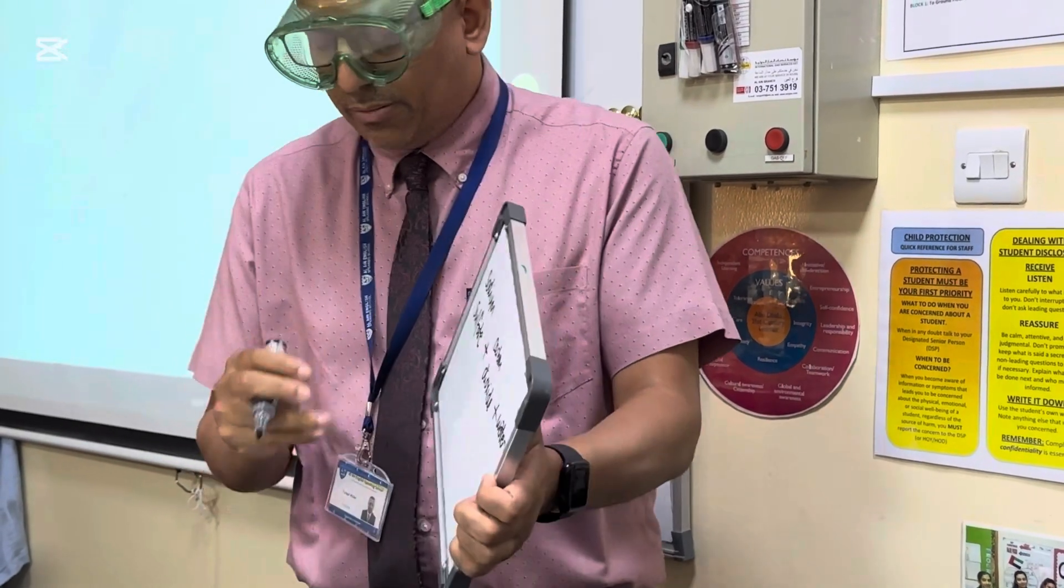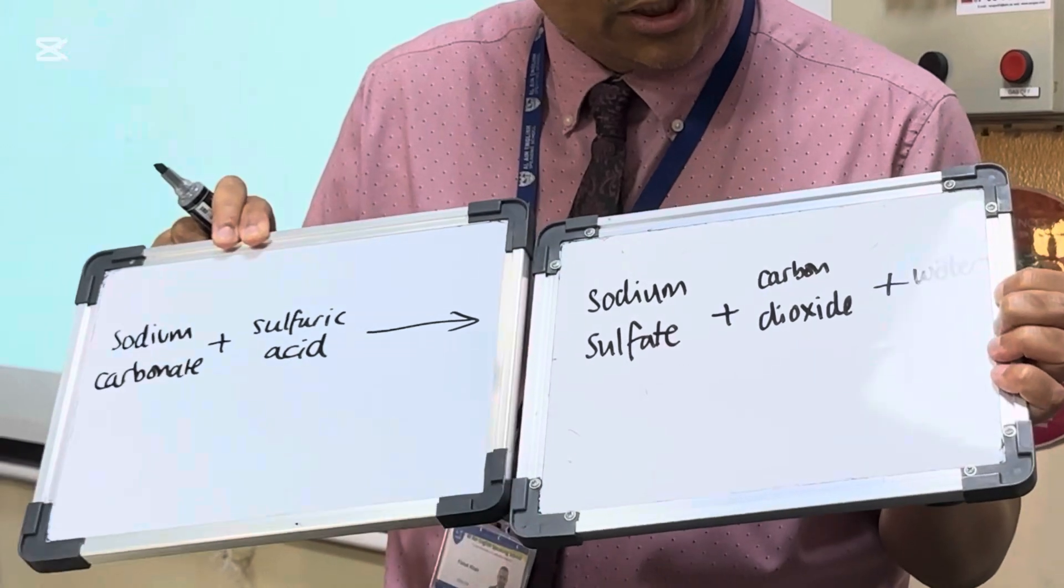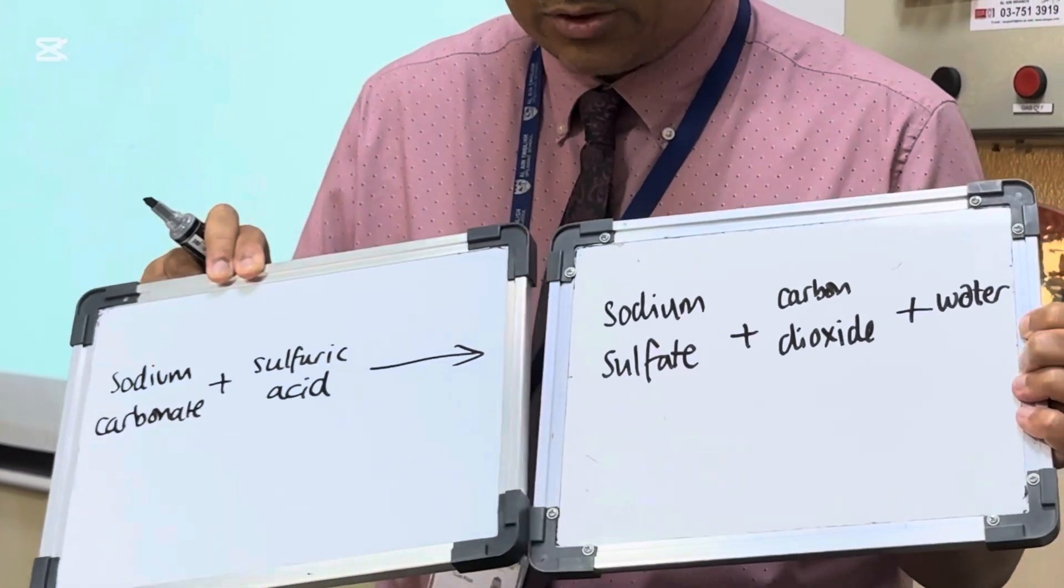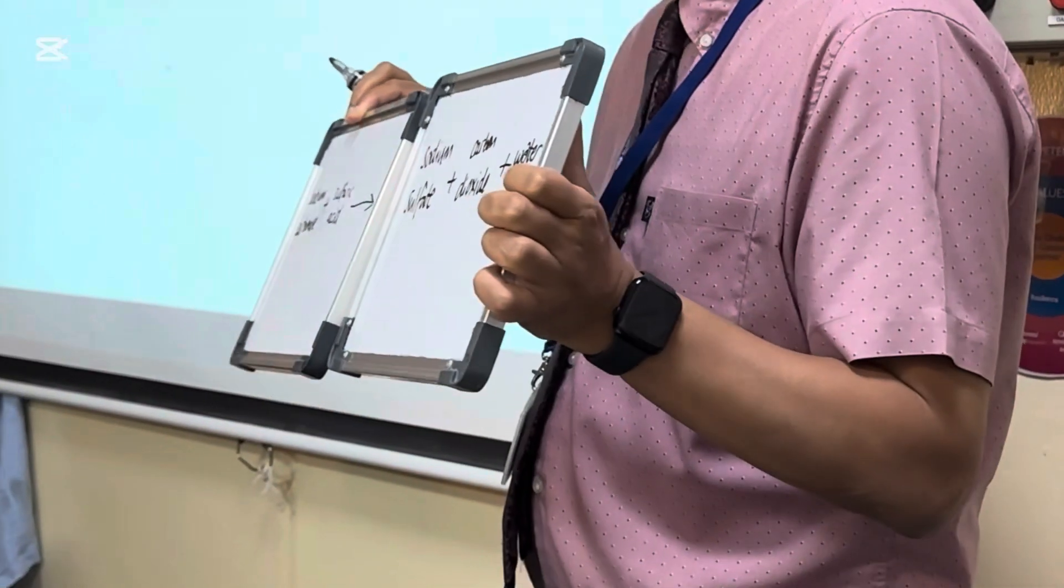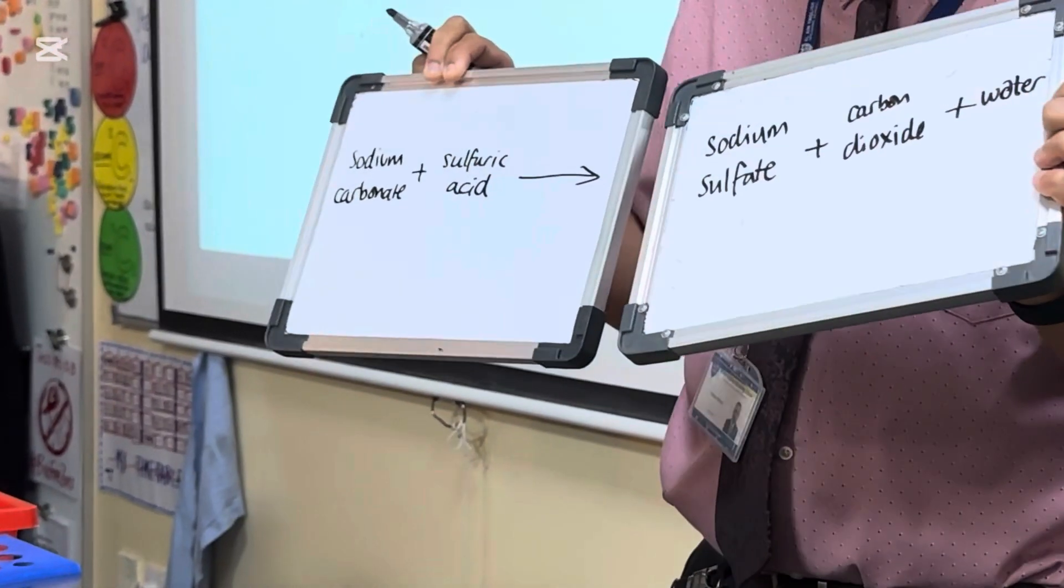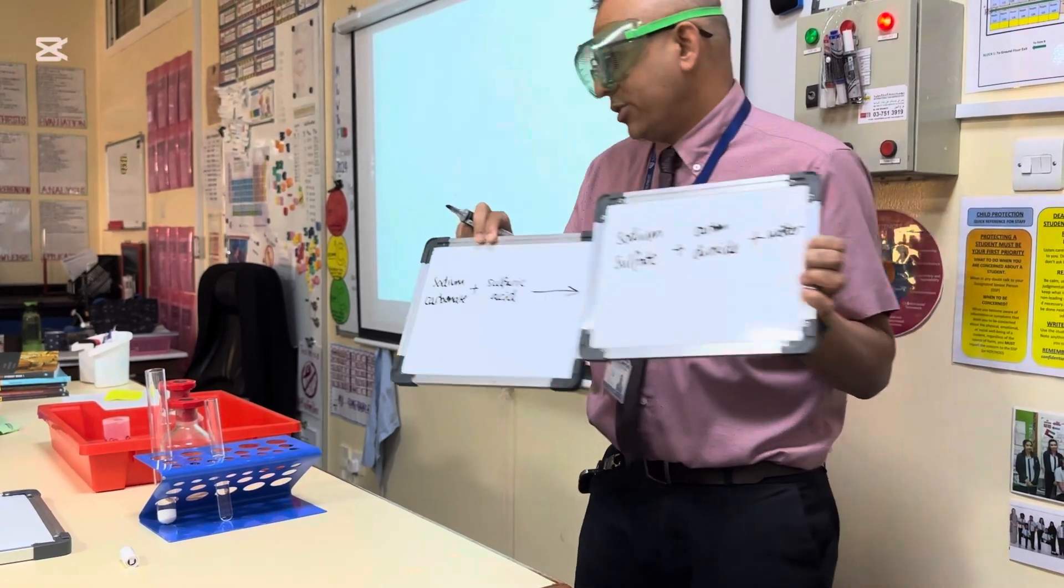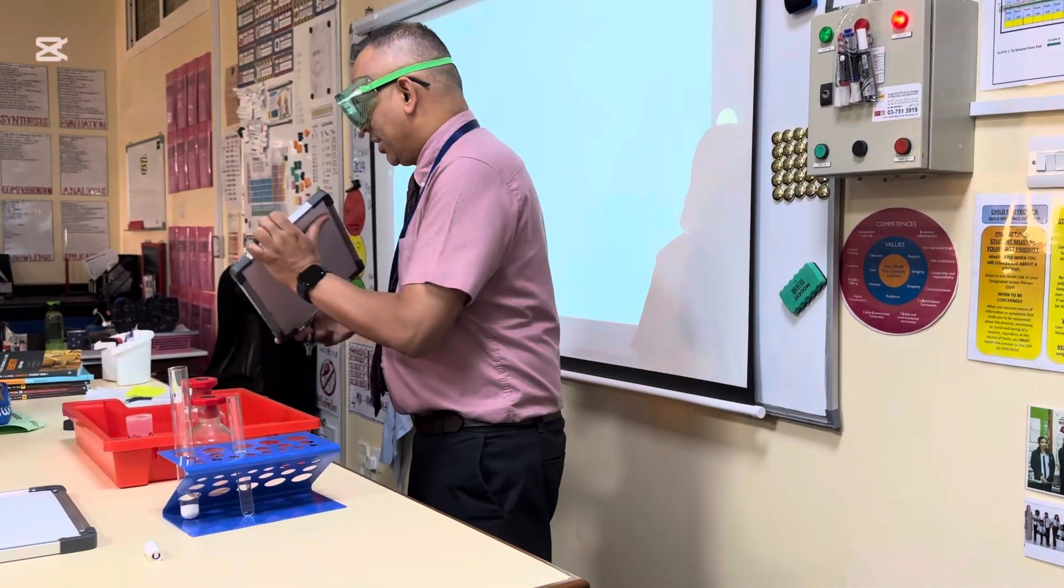So when a metal carbonate reacts with acid, you actually have carbon dioxide, plus water, plus what we call the metal salt. So the metal salt's name in this situation is sodium sulfate. The carbon dioxide, I hope, will be bubbling and the water will remain. So that's the reaction that we've actually got a chance to see today.